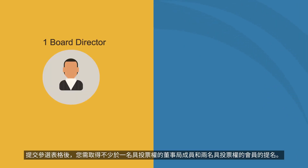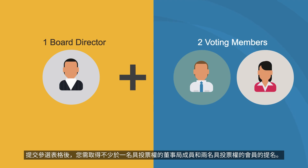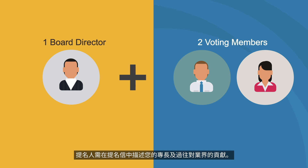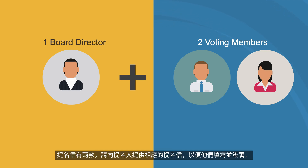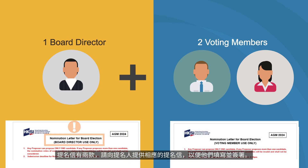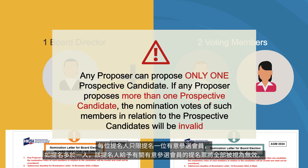After submitting the application form, you must secure support from not less than one board director who is qualified to vote and two voting members during the nomination period. Get someone who knows you well as your proposer, as they will need to describe your specific attributes and past contributions to the industry in the nomination letter. There are two types of nomination letters based on your proposer's role. It is essential to provide the correct letter to your proposer so they can complete and duly sign the appropriate nomination letter. Each proposer can nominate only one candidate — nominating more than one will make all nominations from that proposer invalid.